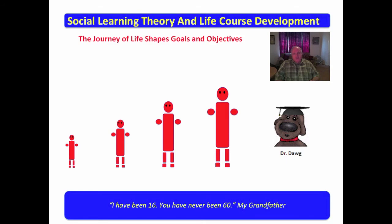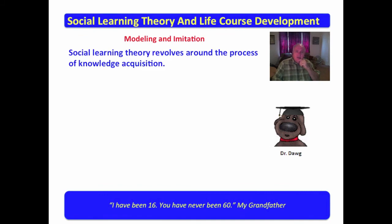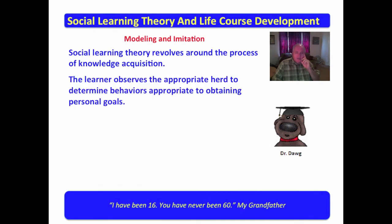We are impacted by personal events, we are impacted by global events, and by every sort of event in between. We are engaged in the process of life, and as we transition through life, the events of life shape our goals and objectives to modify what we see as the ideal life, and certainly to change our value system. Social learning theory again revolves around the process of knowledge acquisition, and the learner observes the appropriate herd to determine behaviors appropriate for obtaining personal goals — the appropriate herd to identify appropriate behaviors.